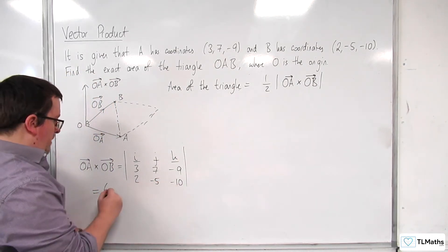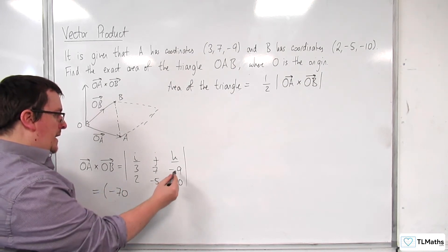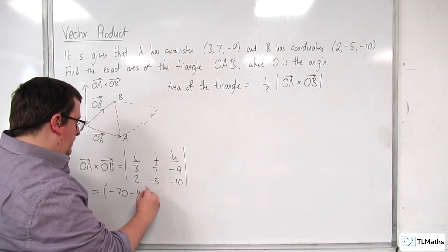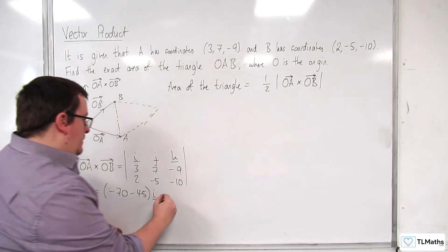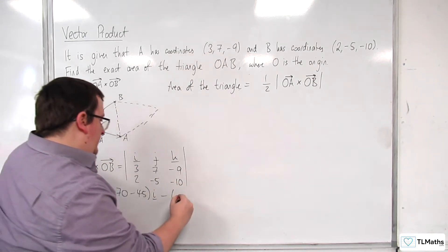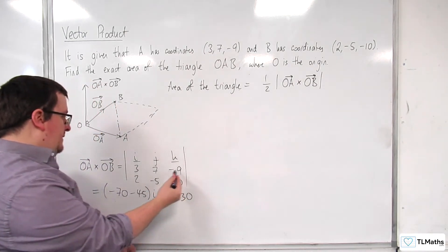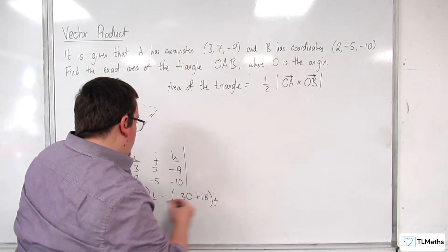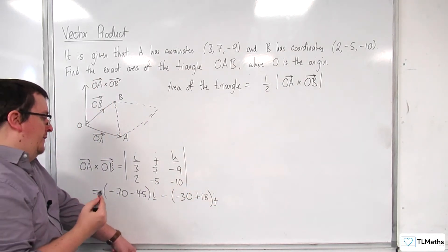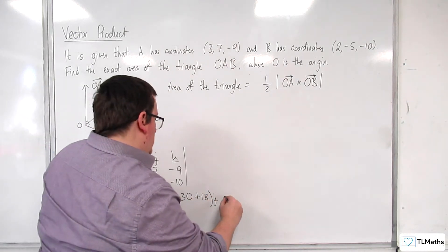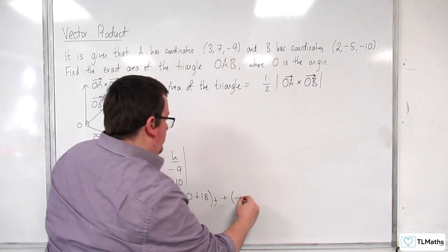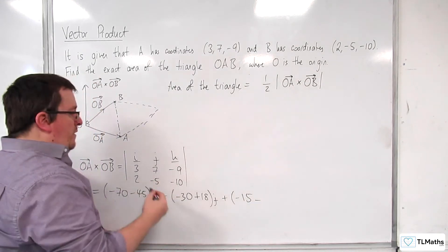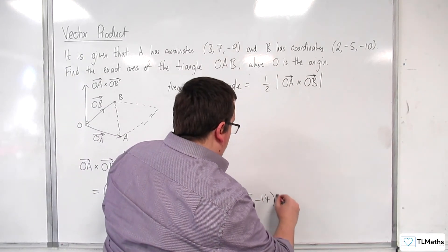So we're going to have minus 70 take away 45, i. Then we've got minus 30 take away, so plus 18, j. And then minus 15 take away 14, k.